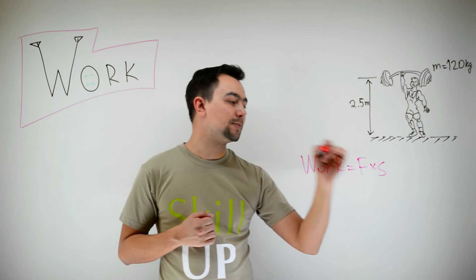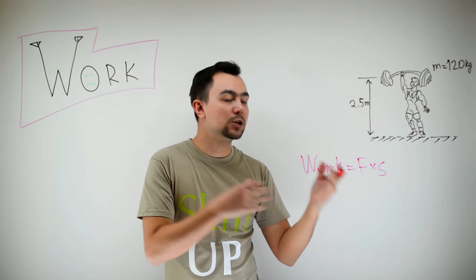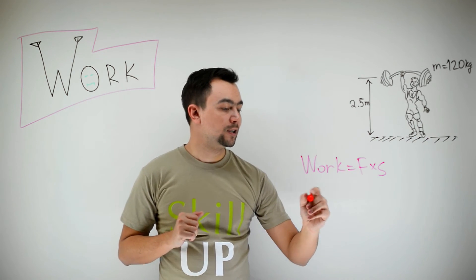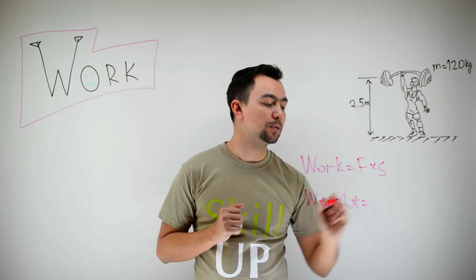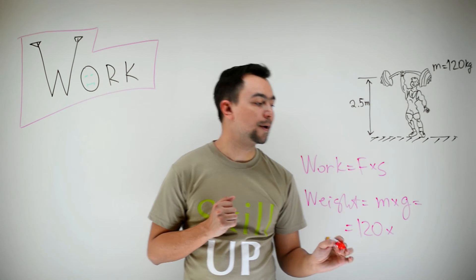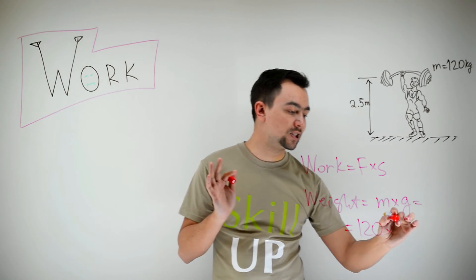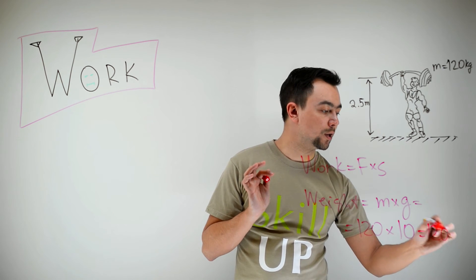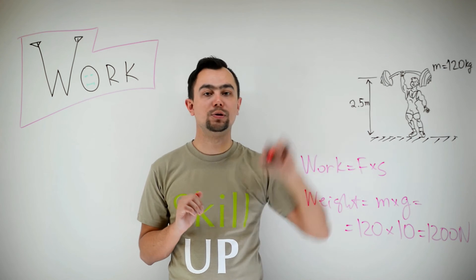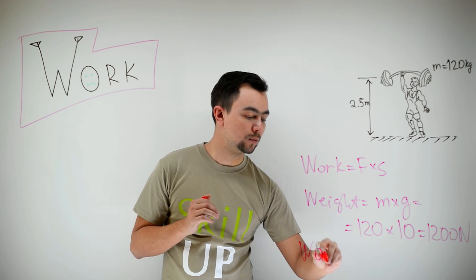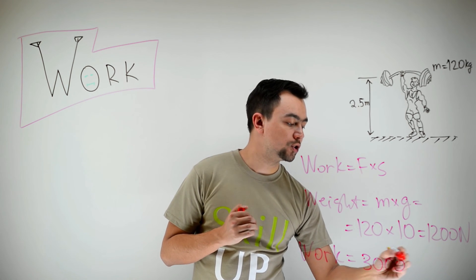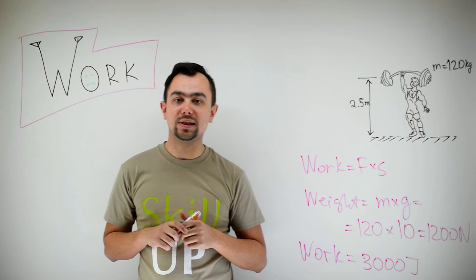So, work is force times distance. As we said earlier, force has to be equal to the weight, because that's the minimum force you need to lift an object. Weight is equal to mass multiplied by gravitational field strength — 120 multiplied by 10 newtons per kilogram gives 1200 newtons. So, work is equal to 1200 multiplied by 2.5, which is 3000 joules. The man has done 3000 joules of work.